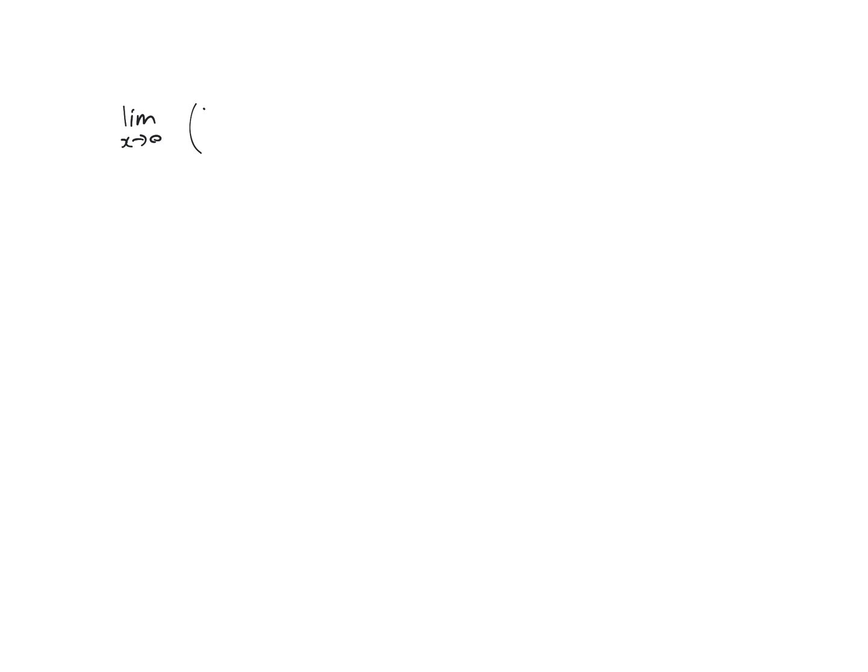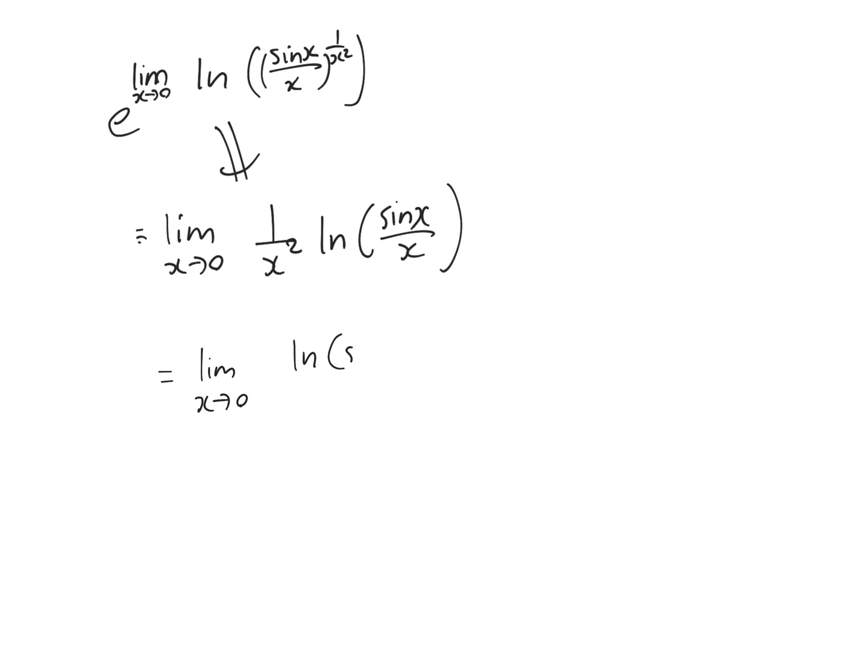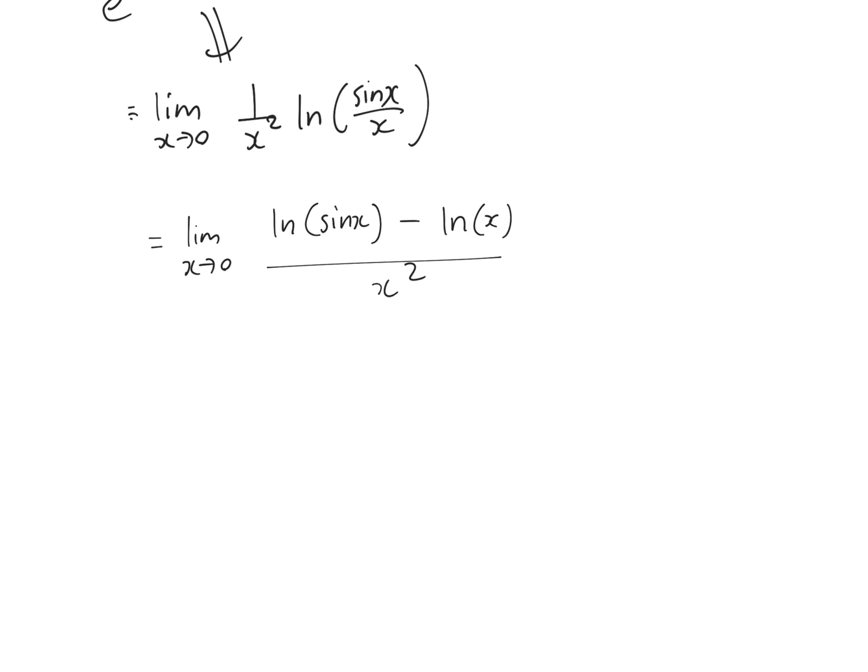When x approaches 0, the university used a logarithmic trick where they take the limit as e to the power of limit when x approaches 0 of natural log of sine x over x to the power of 1 over x squared. And then you can move that down, so you get 1 over x squared times natural log of sine x over x. And then if you really expand on that, when you have a limit inside divided by another, that equals limit as x approaches 0 of natural log of sine x minus natural log of x, whole thing over x squared.